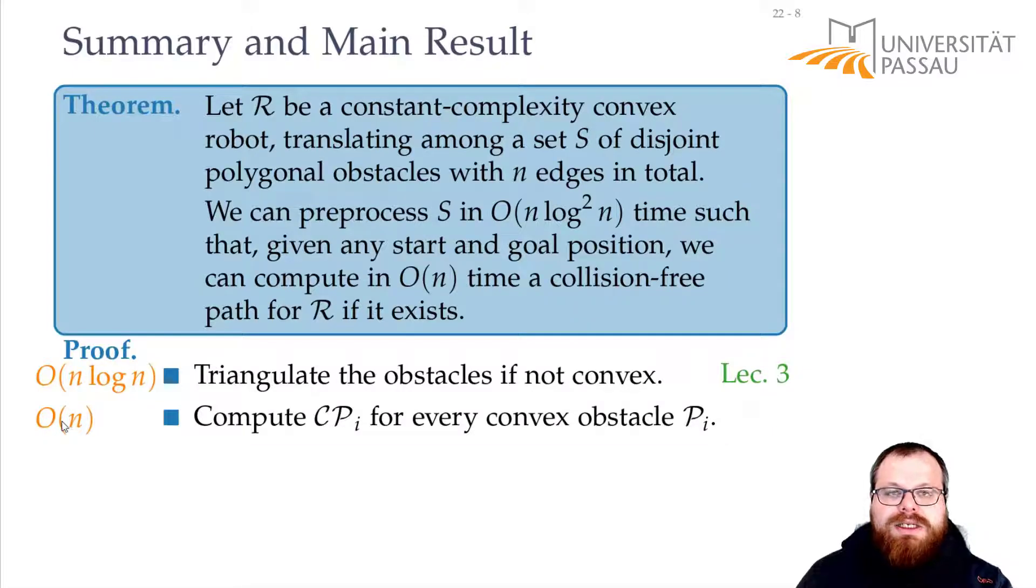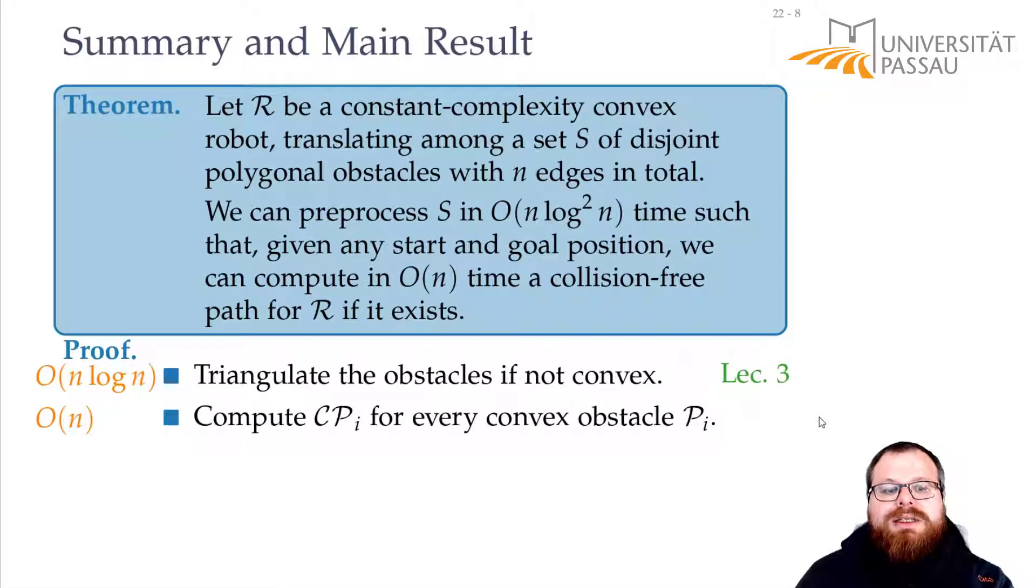Then, we can still do this in linear time. And then, the tough part is, we need to compute their union. And how would we compute the union of all these convex polygons? We can do that using divide and conquer. We just divide the number of polygons into two subsets, then recursively find their union.